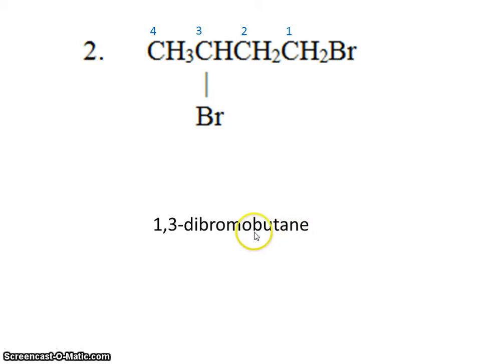Butane is the parent chain, and we have 2 bromines, and they're located off the first and third carbon.